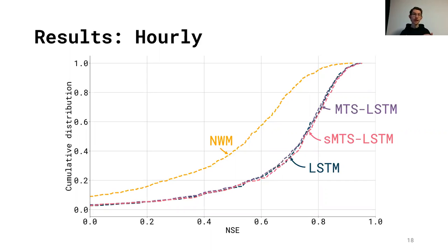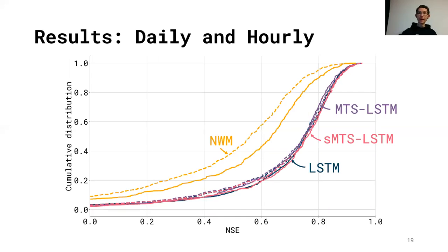We can generate the predictions much faster than in the naive way, and we're still much better than the National Water Model. Now if you look combined at the daily and hourly predictions, what's also interesting is that the process-based model in orange has quite a drop in performance when we go from daily to hourly predictions. So the NSE decreases as we increase the temporal resolution. For the LSTM architectures, there is a small decrease in performance also if we go from daily to hourly. But this decrease is much smaller than for the National Water Model. So we can maintain our accuracy at a much higher level, actually.